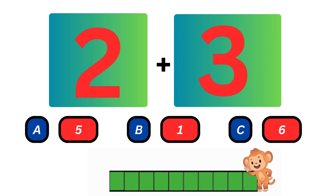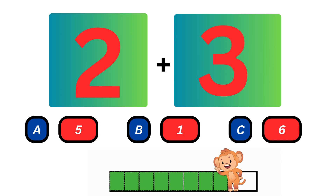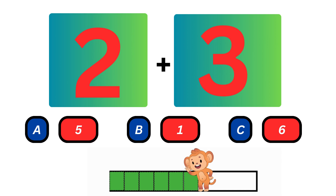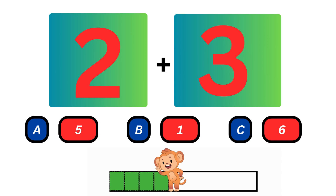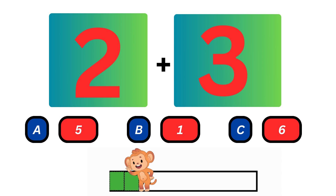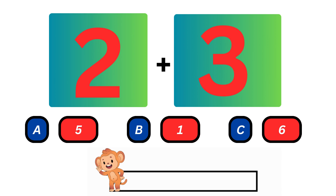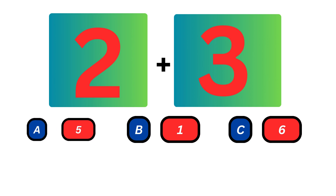What do you get when you add 2 and 3? When you add 2 and 3 you get 5. The answer is 5.